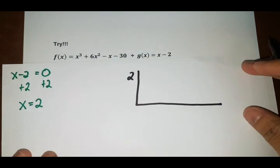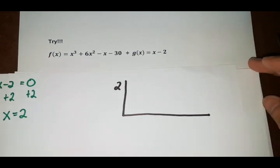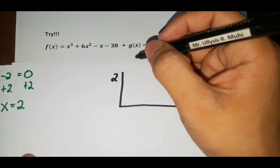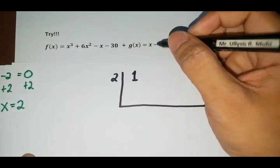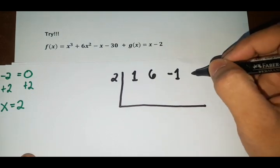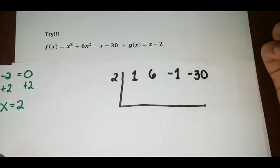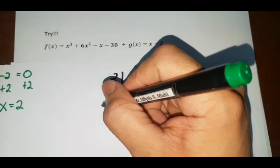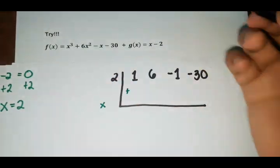Okay, sorry for my line. Okay. So next step, get the coefficients. So 1, 6, negative 1, and negative 30. Okay. So next step, so I want you to write this again so you won't be confused.